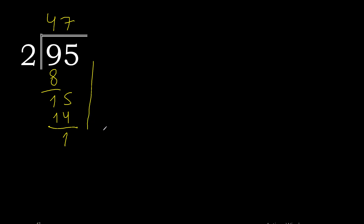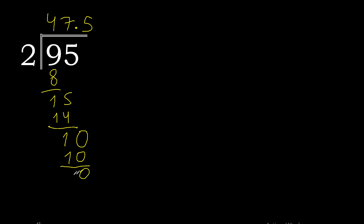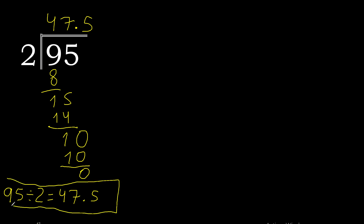There is no number that comes down, therefore complete with 0 — and here with a point. 2 multiplied by 5 is 10; 10 minus 10 is 0. Therefore, 95 divided by 2 is 47.5.